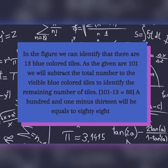Now let's compute. In the figure, we can identify that there are 13 blue colored tiles. As the given are 101, we will subtract the total number by the visible blue colored tiles to identify the remaining number of tiles. 101 minus 13 will be equal to 88.